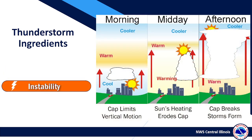Thunderstorms also need a source of instability to form. Early in the morning, typically there will be a layer of warmer air aloft that we call a cap that suppresses vertical motion. However, this cap gets eroded as the day goes on and surface temperatures rise. By afternoon, if the vertical motion can punch through what's left of the cap, or if the cap is completely eroded, then storms will begin to form. Extensive cloud cover can prevent this from happening though.